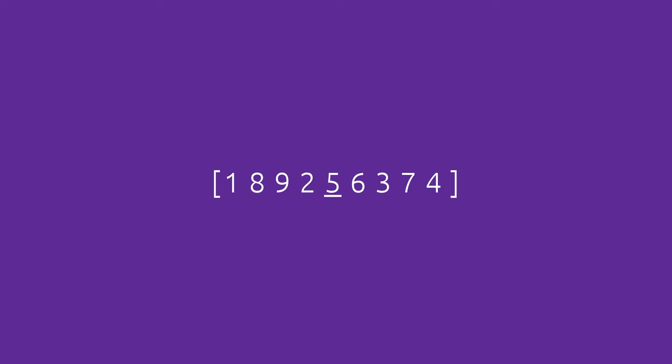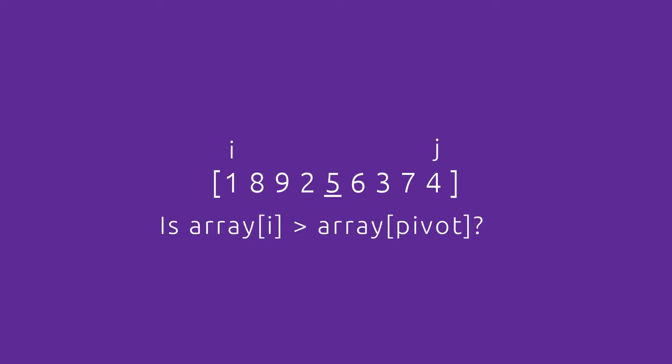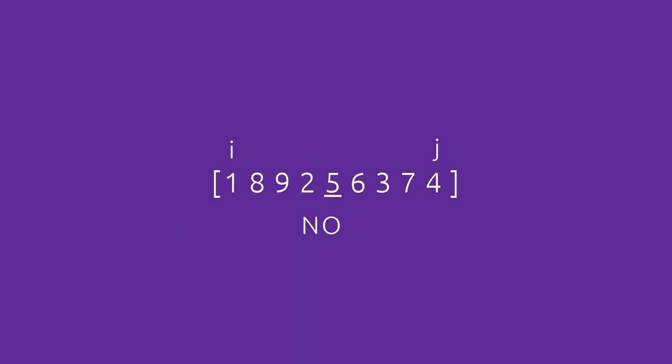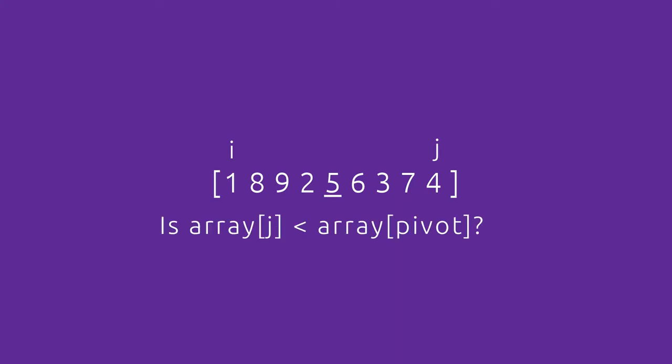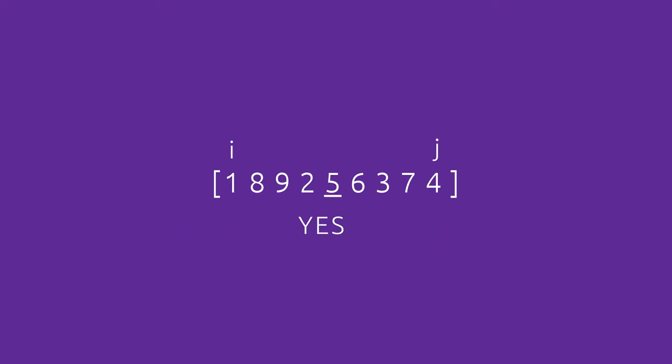We assign two variables i and j to indexes in the array — i to the lowest index and j to the highest index. We run our first comparison: if array[i] is greater than the pivot element, we don't increase i; similarly, if array[j] is less than the pivot element, we don't decrease j. In this case, i is not greater than the pivot so we increase it, however j is less than the pivot so we don't decrease it.